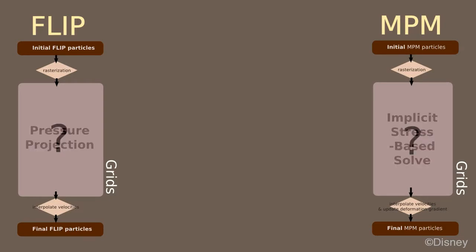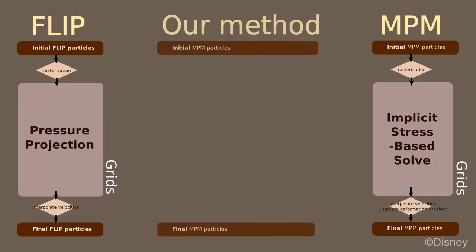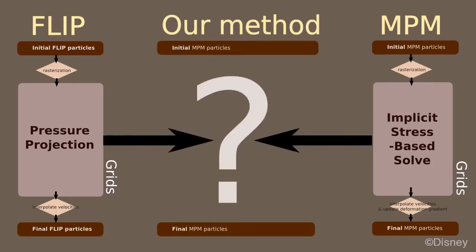FLIP uses a grid-based projection solve, whereas MPM uses a grid-based implicit stress computation. The main idea behind our method is to use a splitting so that we can do both a projection and a stress computation in the same solver.